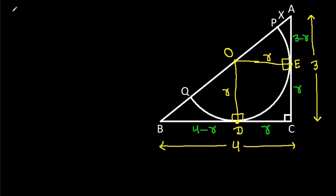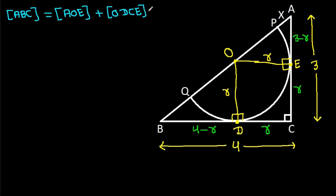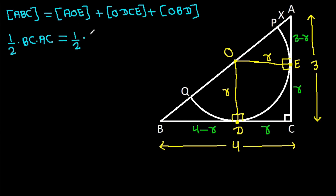The area of triangle ABC equals the area of triangle AOE plus the area of square ODCE plus the area of triangle OBD. Area of ABC equals one-half times base BC times height AC.